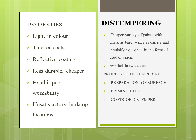Moving on to our most important topic: distemper. Distempers are a cheaper variety of paints with chalk as base, water as carrier, and emulsifying agents in the form of glue or casein. It is applied in two coats. The properties of distemper: they are light in color, thicker coats can be applied, they give a reflective coating, they are less durable compared to paints, they are cheaper, they exhibit poor workability, and they cannot be used in damp locations. The process of distempering includes preparation of surface, application of priming coat, and the coats of distemper — you need to know this in detail.